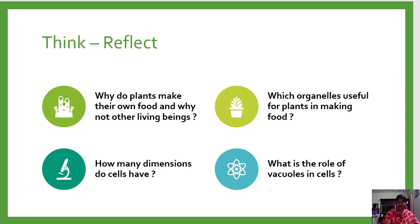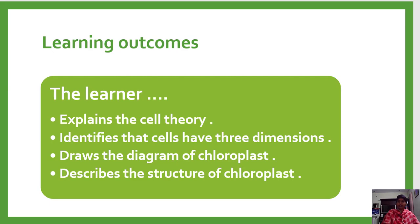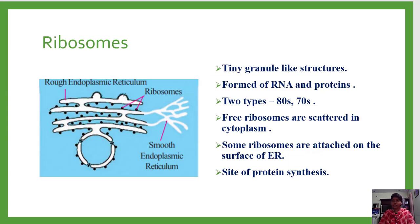Today we are going to learn about cell organelles and also cell theory. The cell organelles we will cover include ribosomes, plastids, and vacuoles. From this lesson, the learner will explain the cell theory, identify that cells have three dimensions, draw the diagram of a chloroplast, and describe the structure of chloroplasts with the help of a diagram.